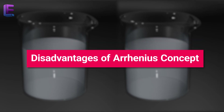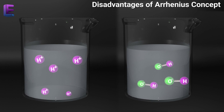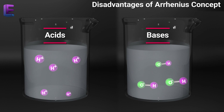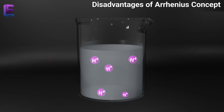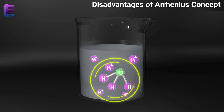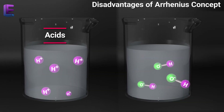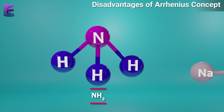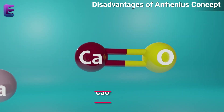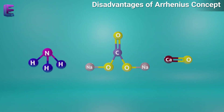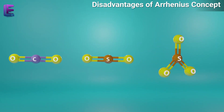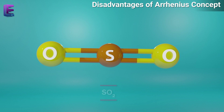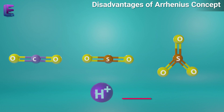Disadvantages of the Arrhenius concept. According to the Arrhenius concept, acids and bases in aqueous solutions are described by the H-plus and OH-minus ions they produce. But these ions can't be present freely in an aqueous solution — they may be present as hydrated ions. The Arrhenius concept requires hydrogen ions in acids and hydroxyl ions in bases compulsorily. Despite this, substances like NH3, Na2CO3, and CaO are bases yet do not contain hydroxyl ions. Similarly, substances like CO2, SO2, and SO3 are acids but do not contain hydrogen ions.